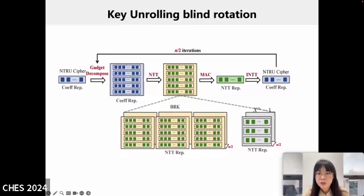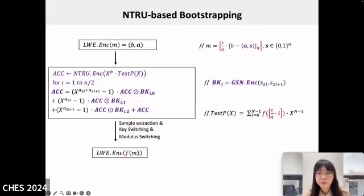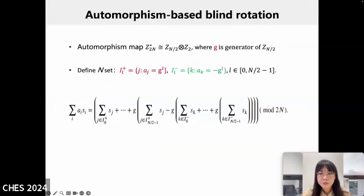The diagram illustrates our blind rotation computation process. First, the NTRU key undergoes an approximate gadget decomposition. Then, these ciphertexts are transformed using NTT and pointwise multiplication with GSW keys, which have been pre-processed into NTT form. After summing, the NTT-form NTRU ciphertext is converted back to coefficient form. This flowchart represents the entire bootstrapping computation process. After completing the blind rotation, we can use the sample extraction algorithm to convert the NTRU ciphertext into an LWE ciphertext.